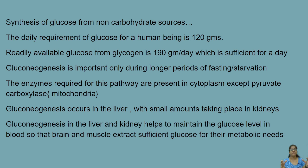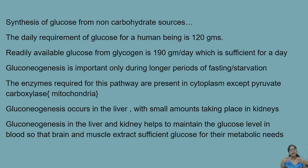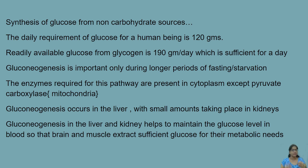The daily requirement for a human being is only 120 grams of glucose per day. If a person is fasting, the stored form of glucose called glycogen in the liver — about 190 grams — would immediately get converted to meet the daily requirement. But if starvation continues for one or two more days, glycogen levels also get depleted, so the body needs other sources to produce glucose.